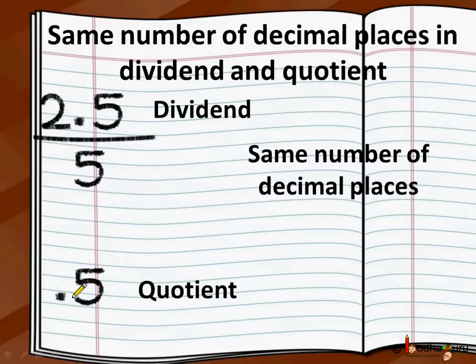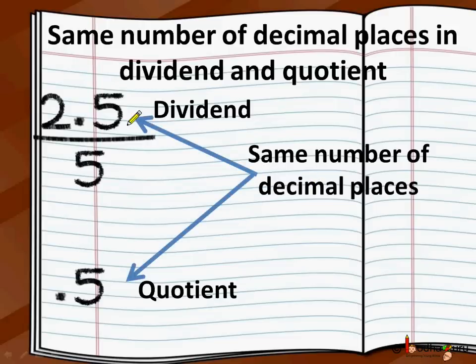2.5 liters of milk divided into 5 parts equals 0.5 liters. We did first 25 divided by 5, got 5, and then put the decimal point in the result at the same position as in the dividend. So there are the same number of decimal places in the dividend as well as the quotient.